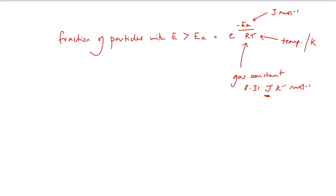So what is this equation telling us? The important thing to note about this mathematical expression is that the term RT — gas constant times the temperature — is telling us that the higher the temperature, the greater the probability that a particle possesses a particular energy.